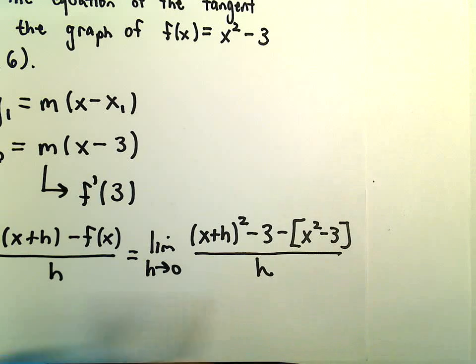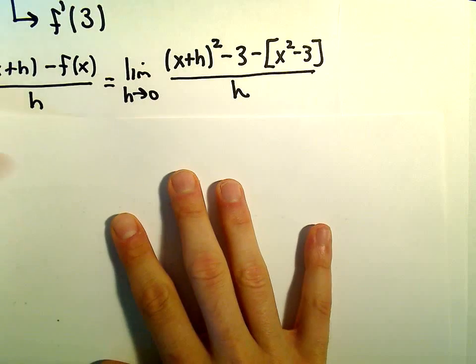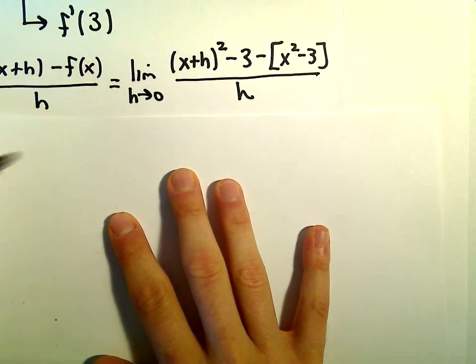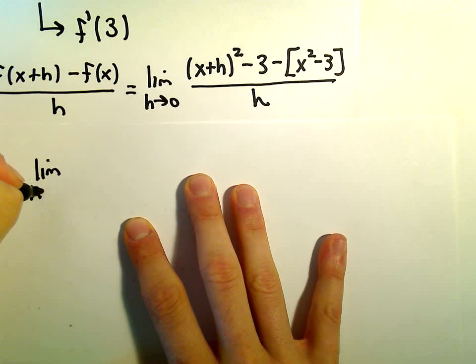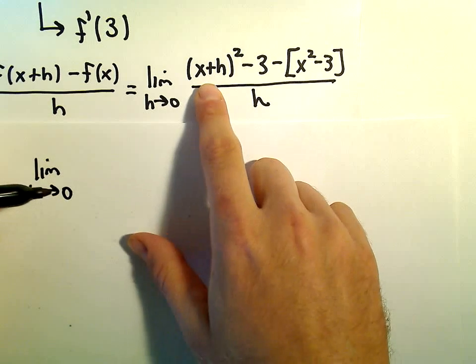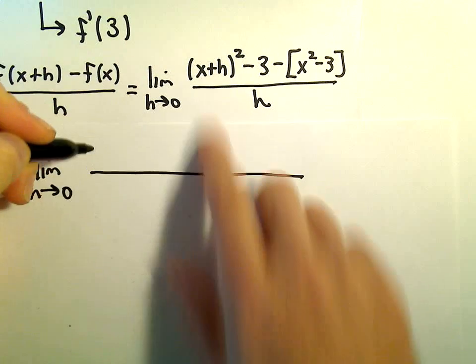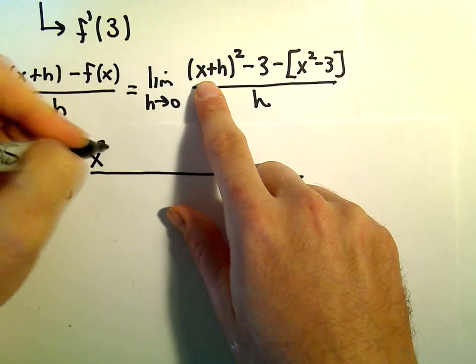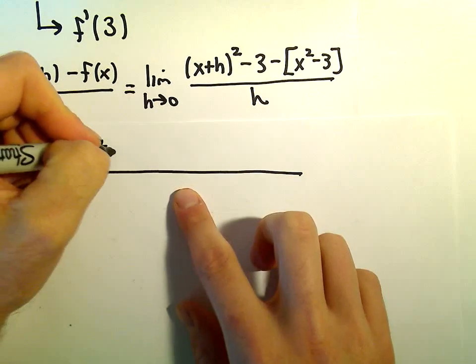And then all of that will be divided by h. So now we just need to simplify this expression. We would have the limit as h approaches 0. This is x plus h times x plus h. So if you were to distribute that out, we would get x squared, an xh and then another xh, which would give us 2xh.